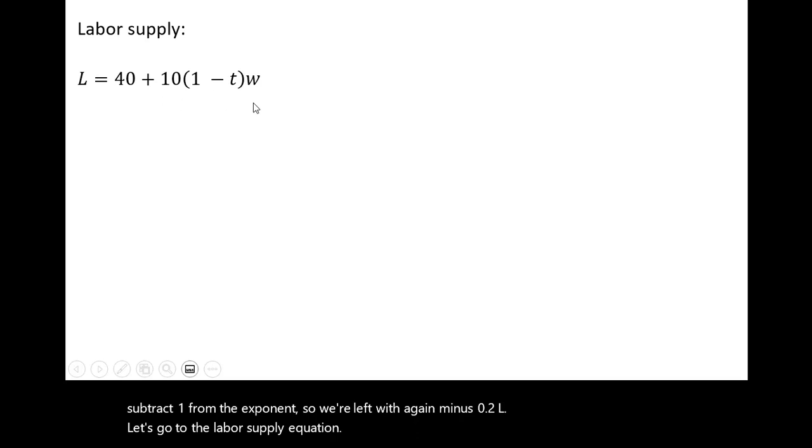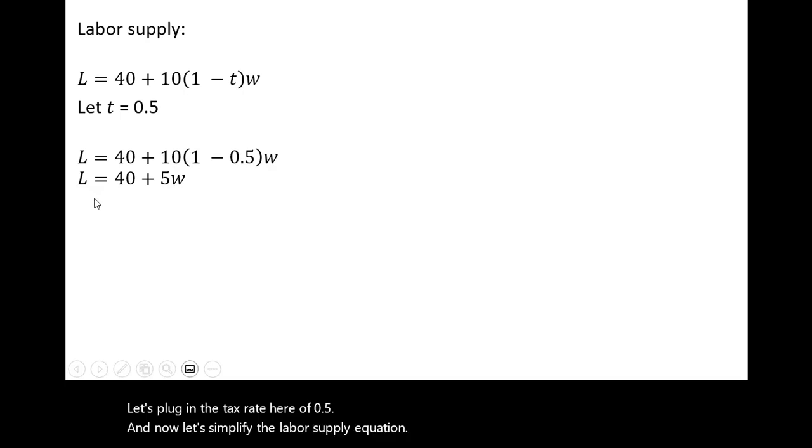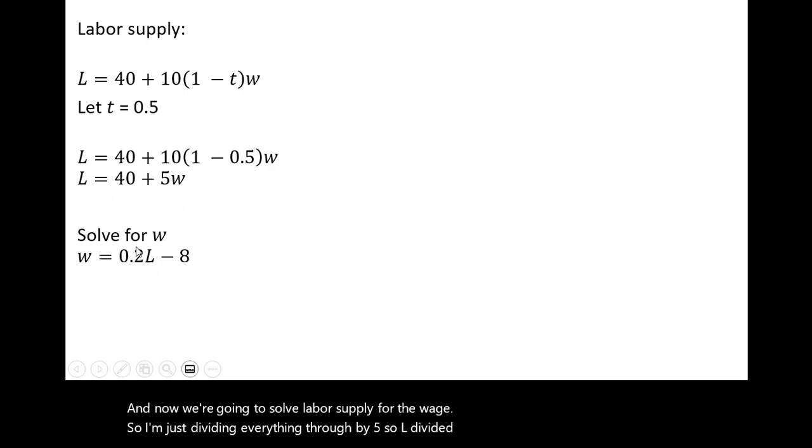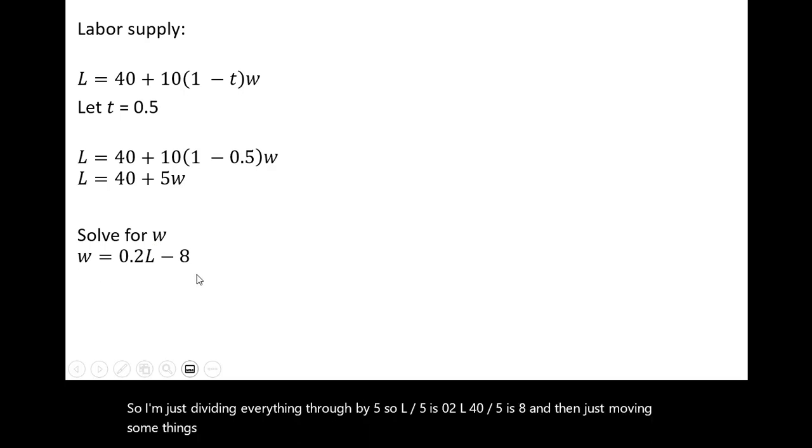Let's go to the labor supply equation. Here's our labor supply equation from earlier. Let's plug in the tax rate here of 0.5, and now let's simplify the labor supply equation. And now we're going to solve the labor supply for the wage. So I'm just dividing everything through by 5. So L divided by 5 is 0.2L, 40 divided by 5 is 8, and then just moving some things around, we get the following equation for the wage.